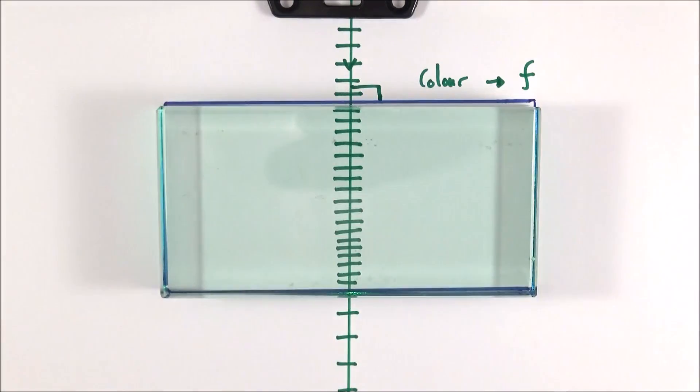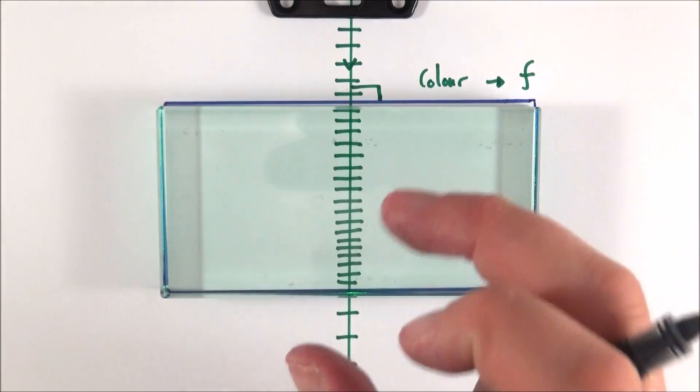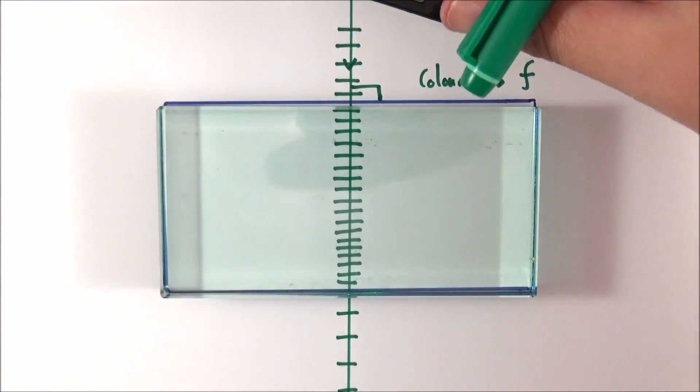So refraction doesn't refer to the change in velocity or the change in speed of that wave, but refraction refers to the change in direction of a wave, which is what happens at angles of incidence other than zero.